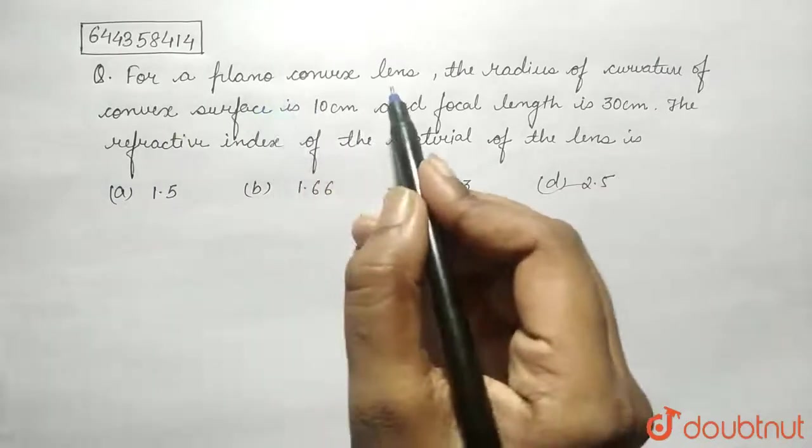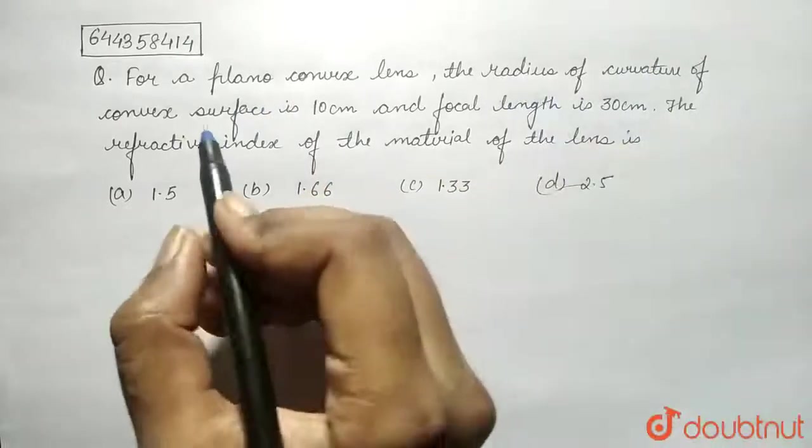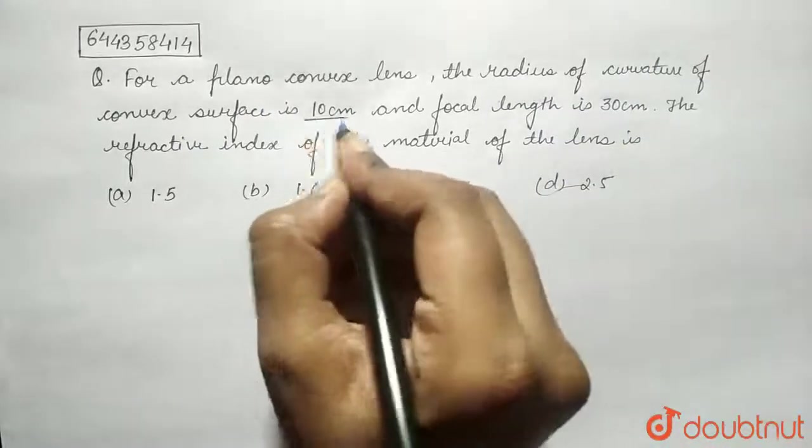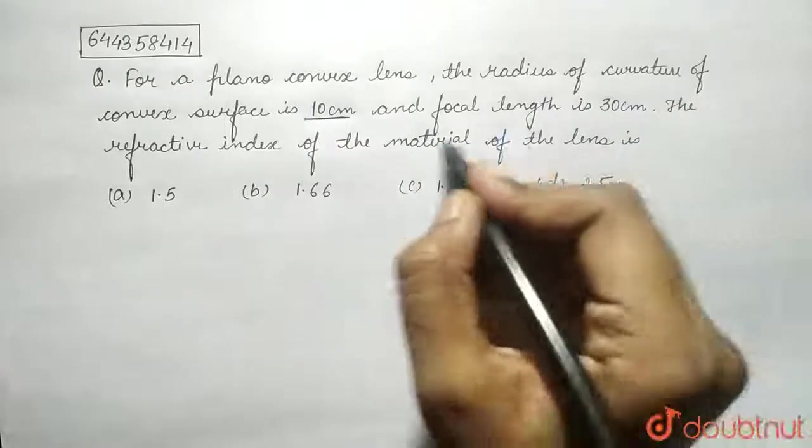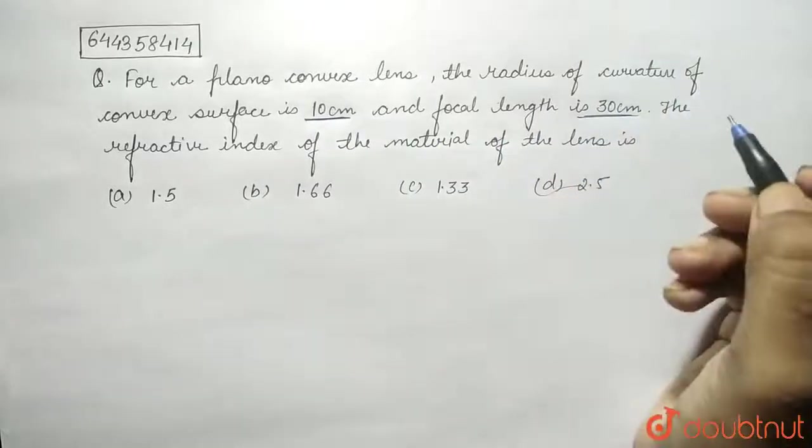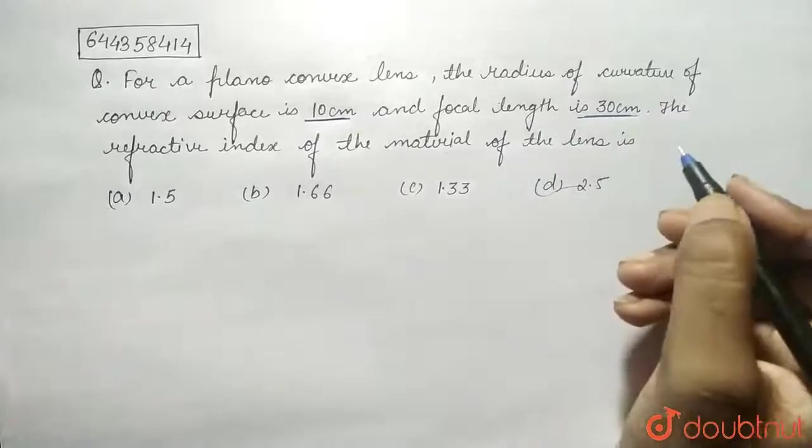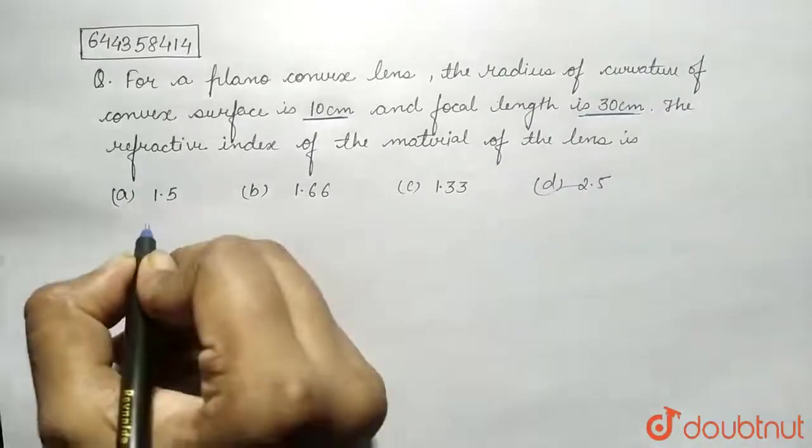a plano convex lens, the radius of curvature of convex surface is 10 centimeter and the focal length is 30 centimeter. The refractive index of the material of the lens is - so what we need to find is μ.